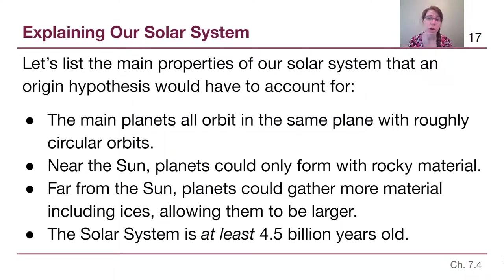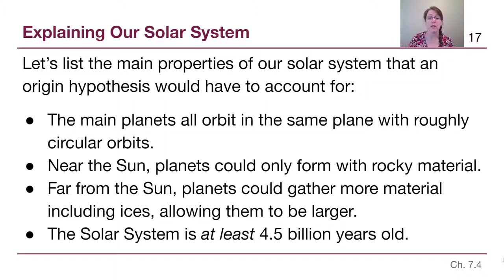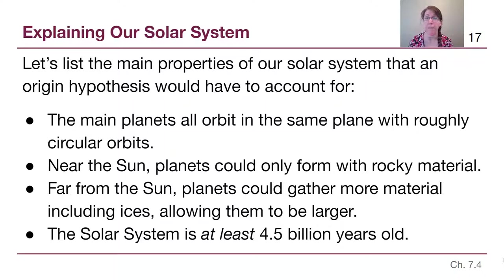Any model we come up with has to show that the solar system it describes is at least 4.5 billion years old, because we have those numbers from radioactive dating.